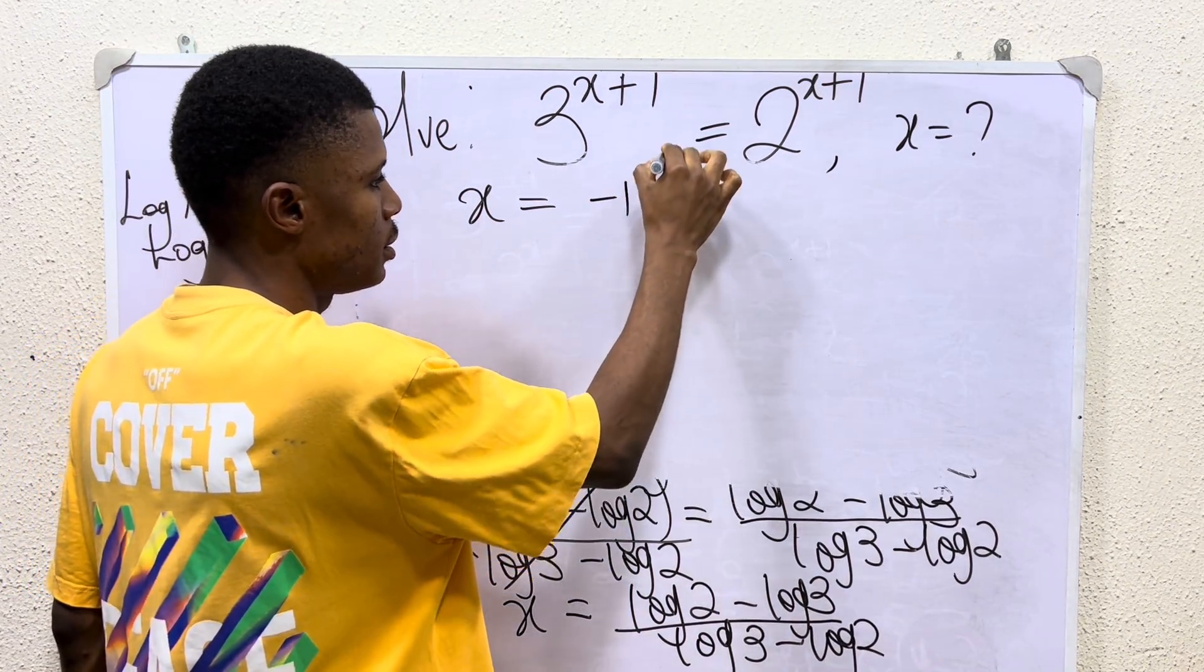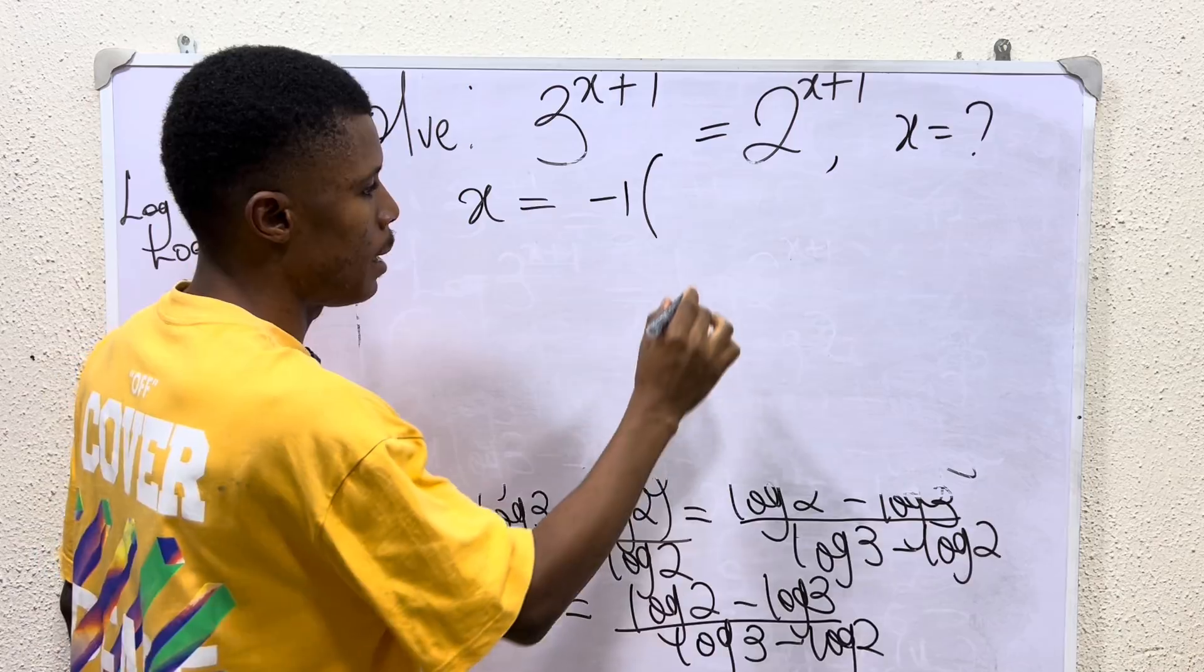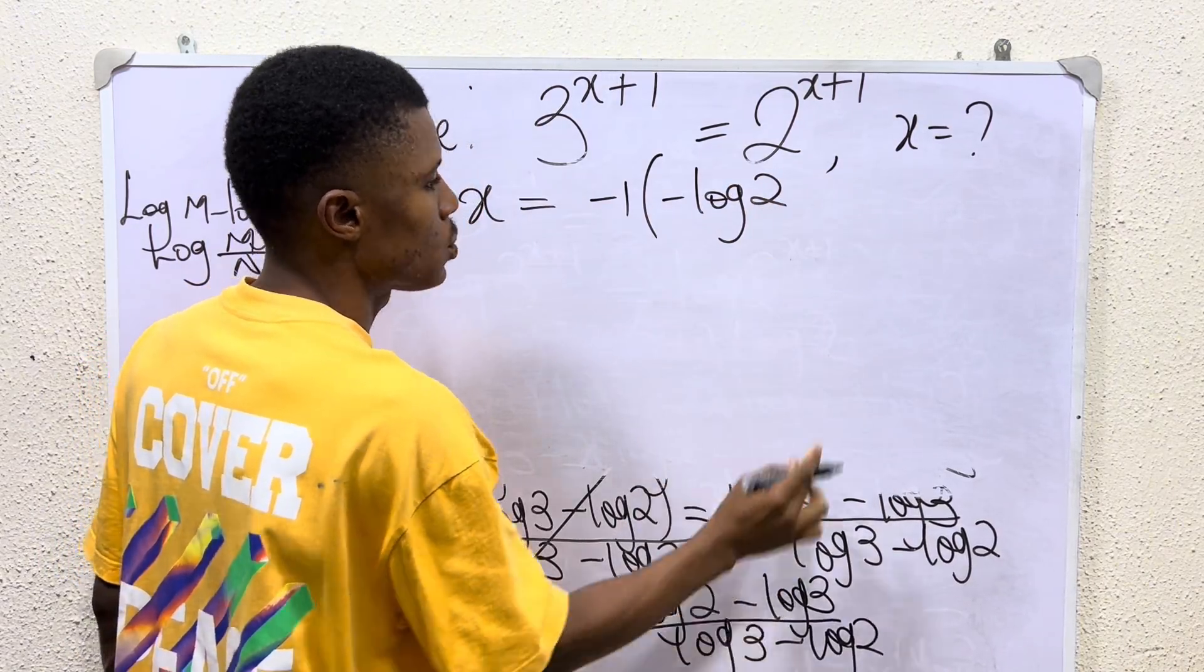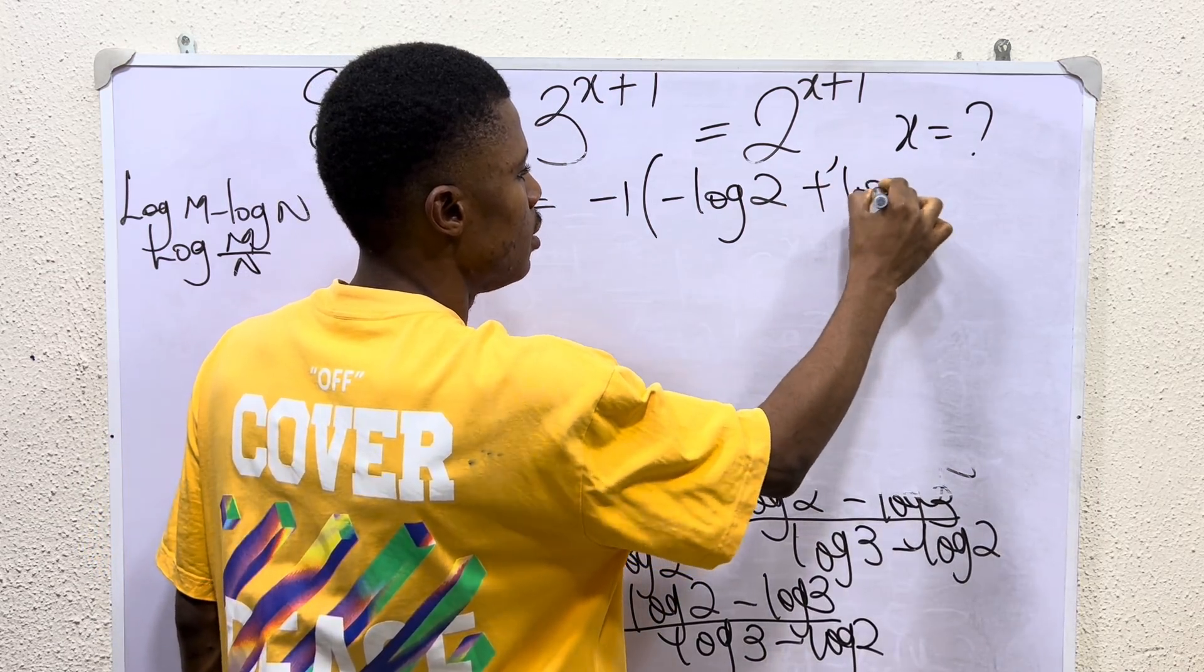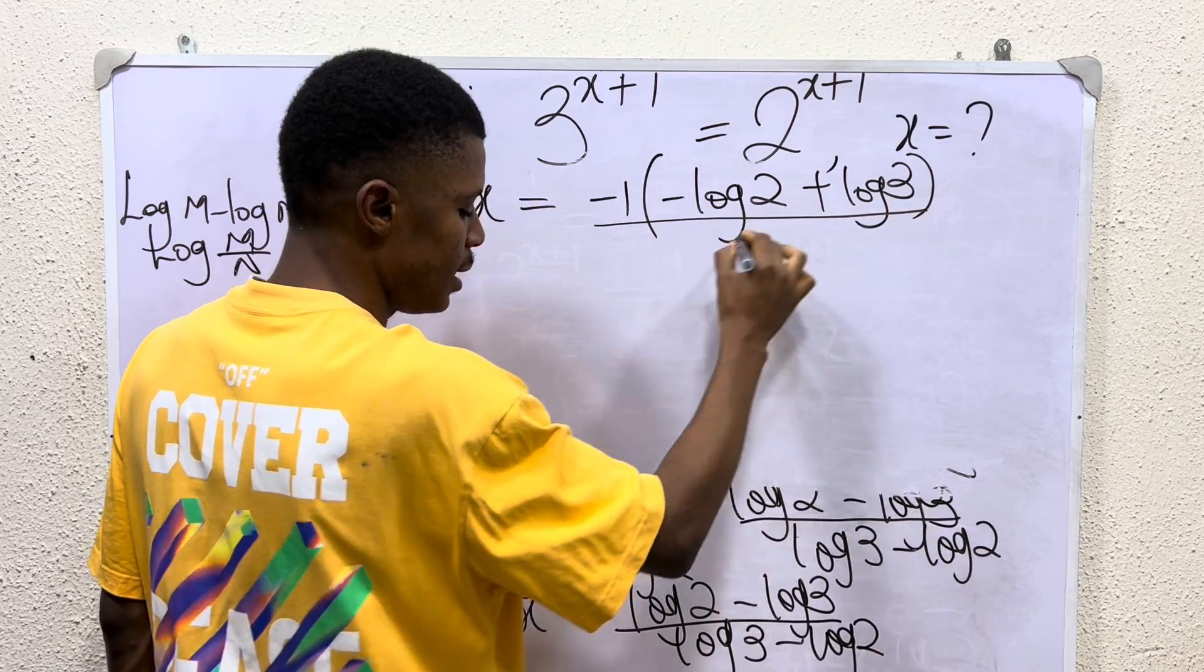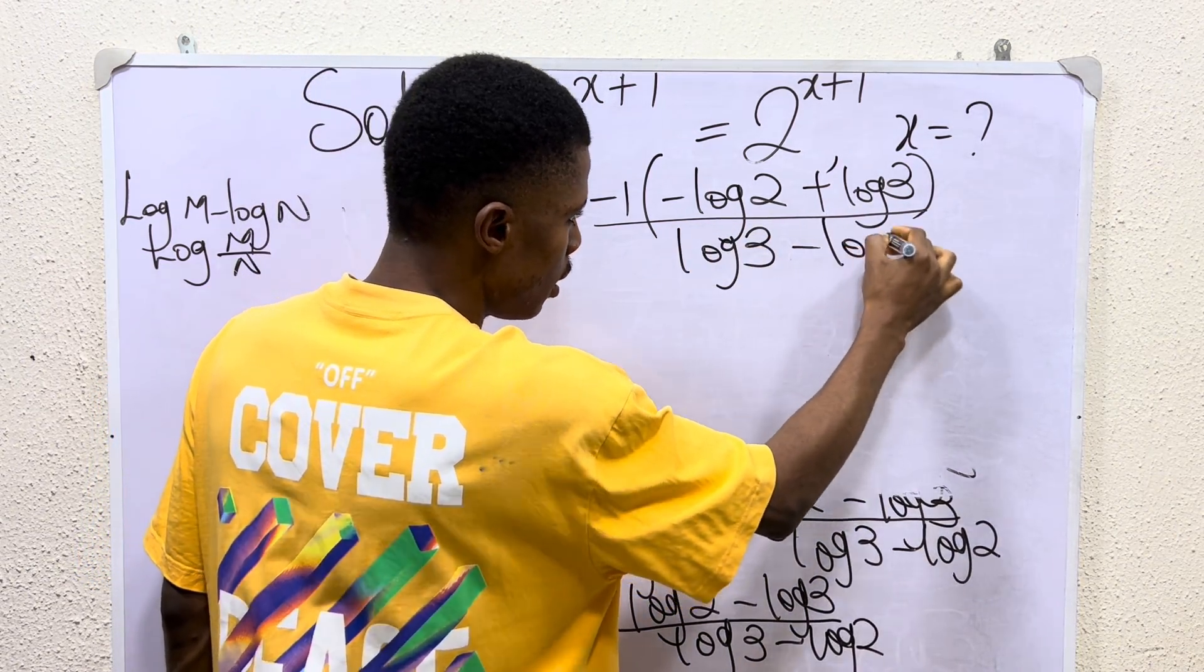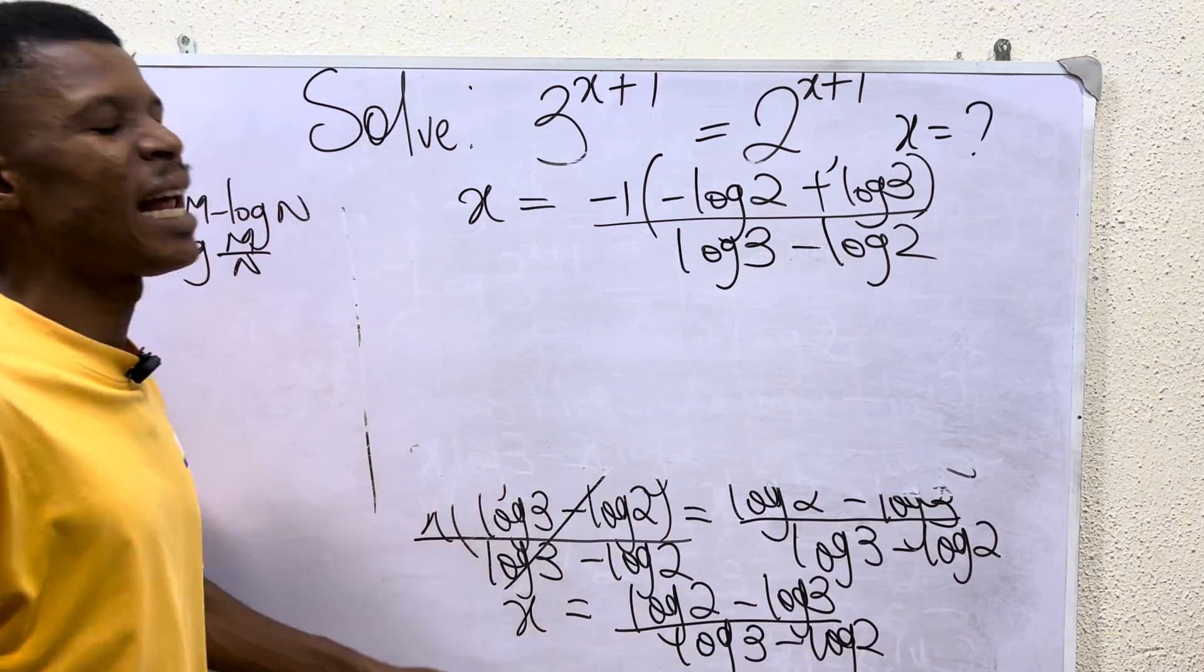So let's factor out -1. We are left with -log 2. If you factor -1 here, you have it as plus log 3, then all divided by log 3 minus log 2.